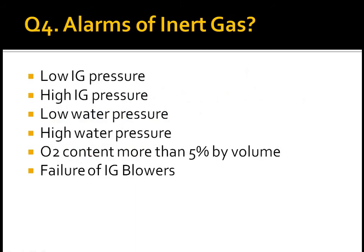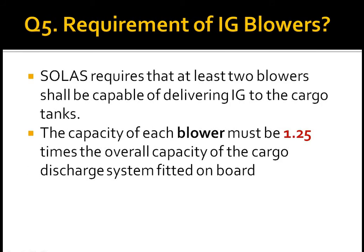Question 4: alarms of the inert gas system. These include low IG pressure, high IG pressure, low water pressure, high water pressure, oxygen content more than 5% by volume, and failure of the IG blower.